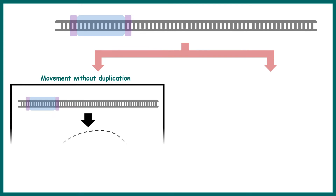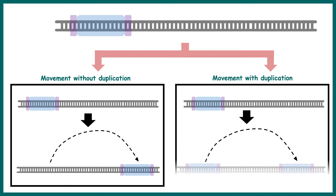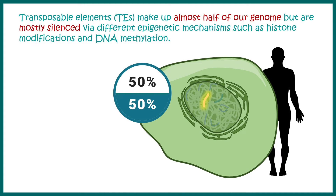So we can understand there are two modes of transposition: first is without duplication and the second is with duplication. You can imagine these as a cut-and-paste and copy-and-paste mechanism. Interestingly, transposable elements compose 50% of our genomes, but they are generally epigenetically silent.